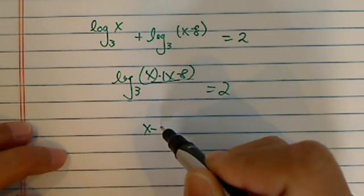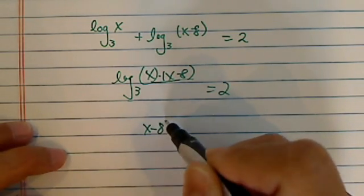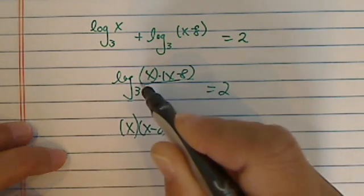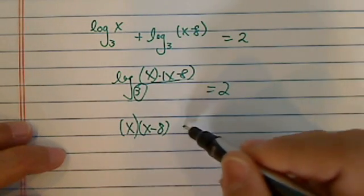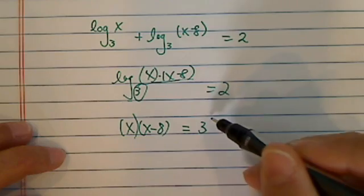From here we can see x minus 8 times x. Keep the base. So this is equal to 3 squared.